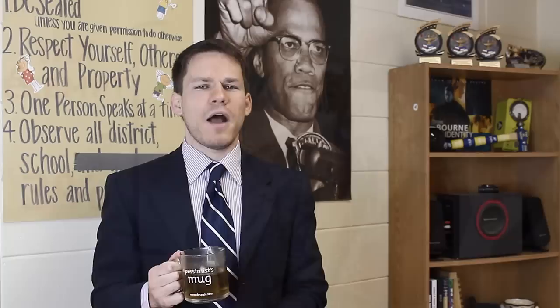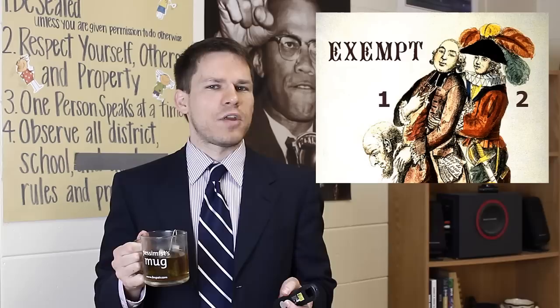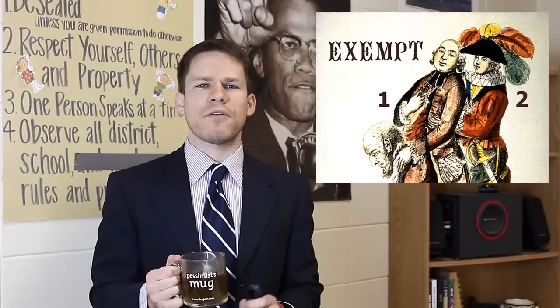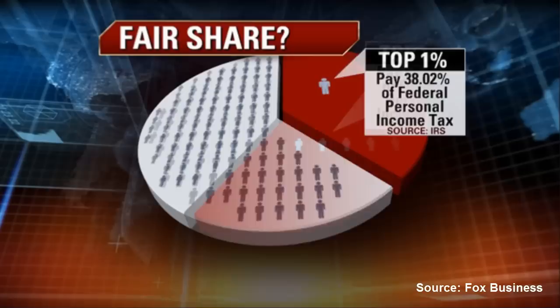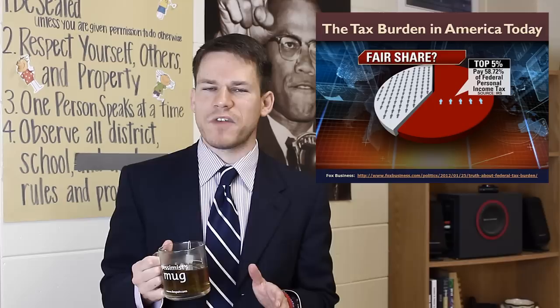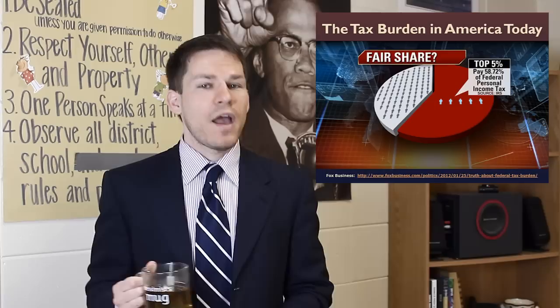Exempting 3% of the population from taxes can't make too much of a difference — but keep in mind that the clergy and the nobility make up the wealthiest classes in early modern France. If you take a look at this graph, you can see that in the United States today the top 1% of the population pays 38% of the taxes, and the top 5% pays 58% of the taxes. So if we exempted the top 3% of our population from taxes, that would be roughly half of the tax revenue we get — a very drastic impact on the government's ability to raise money.